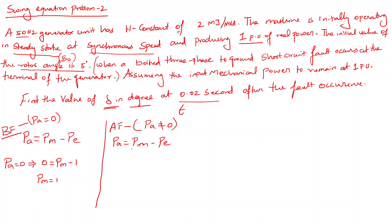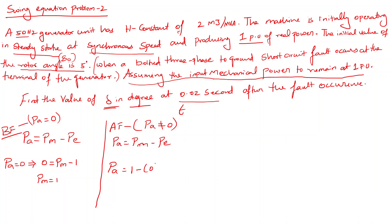The same condition applied after the fault: PA is not equal to zero. We need to find the PA value. They state that the input mechanical power remains at 1 per unit — meaning no change in mechanical power; only an electrical fault has occurred. So I put PM equals 1 on the mechanical side. After the fault, since it is a short circuit, there is no electrical power output, so PE equals zero. Therefore, PA equals PM minus PE equals 1 minus 0, giving PA equals 1.